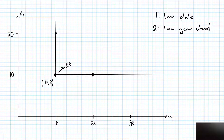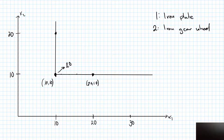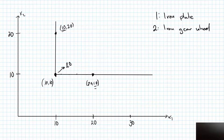The point here is that the only number I care about is the minimum value of x1 and x2. Here I have twenty comma ten, and the only important number here is this ten. Here I have ten comma twenty, and again, I care about this ten. Since I need precisely one iron plate and one iron gear wheel to produce two transport belts.